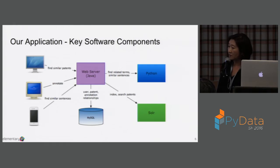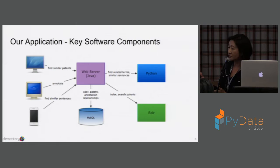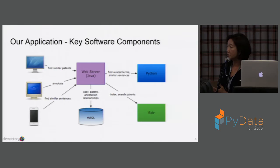The key software components — this is mostly just the online application. Our batch processing is primarily in Python, and this is the architecture for the major software components for the online application. On top is the web server — the web server is Java, Tomcat. The web server takes requests from the user; it's a web application in the cloud. The web server basically dispatches the user request to different software components, Python being one. We leverage Python's ability to return related terms given what the user types in, to identify a list of terms potentially related to what they enter, and then do similarity search.